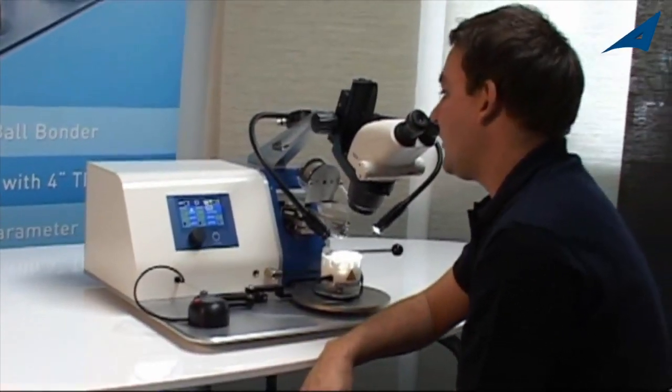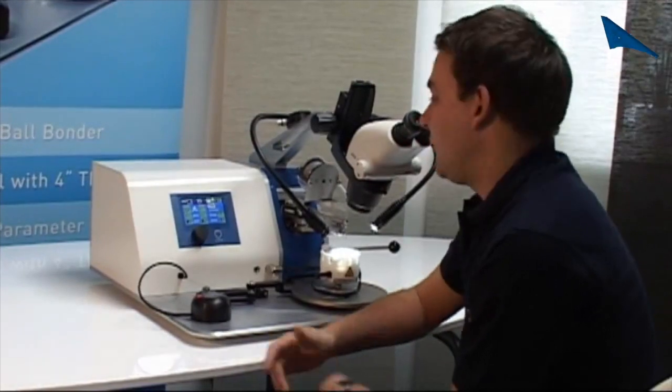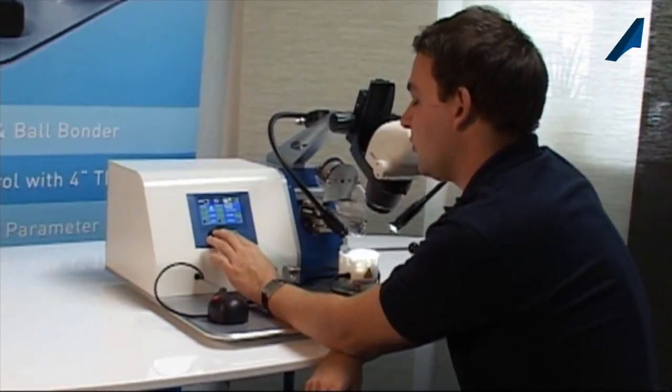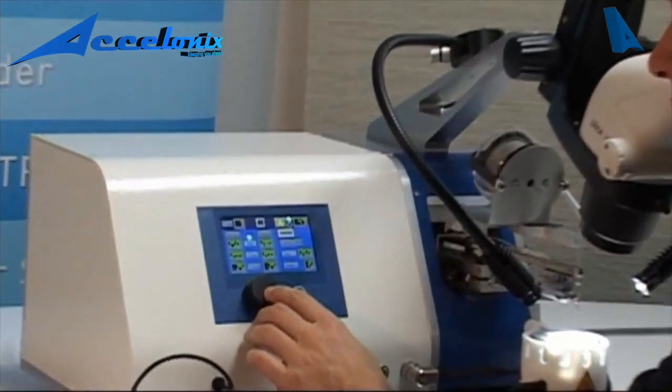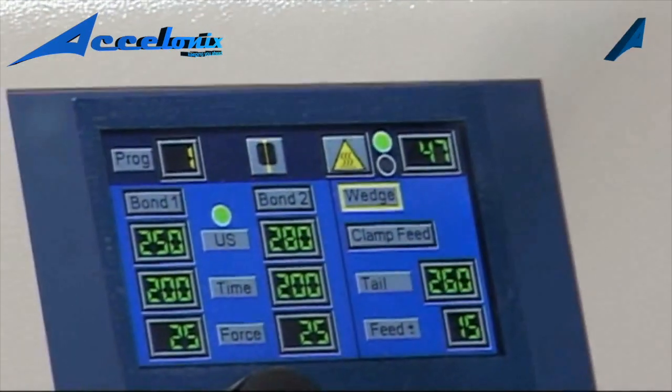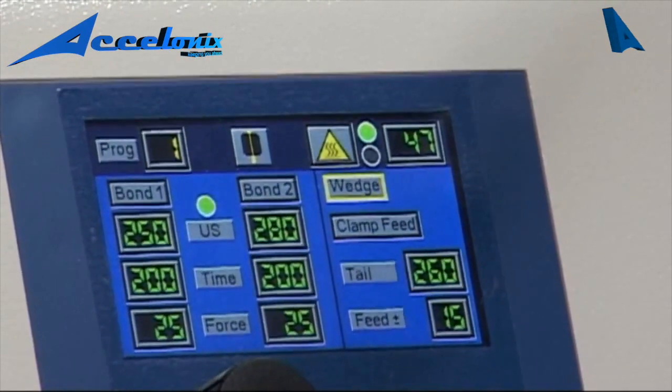If your machine is a wedge bonder only, then this button is disabled. So you can only use the wedge bonding mode, and there will be no possibility to change to other modes.